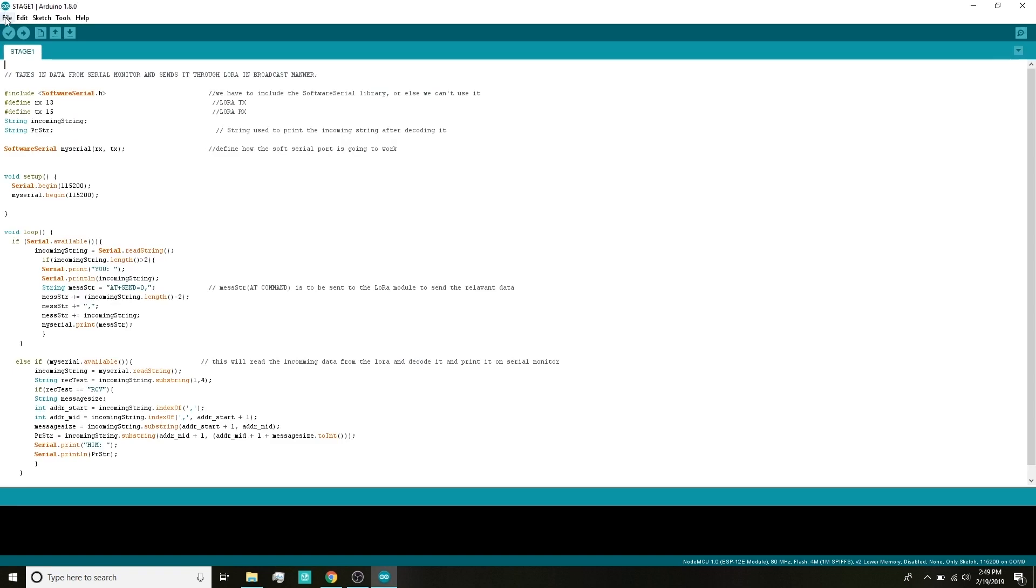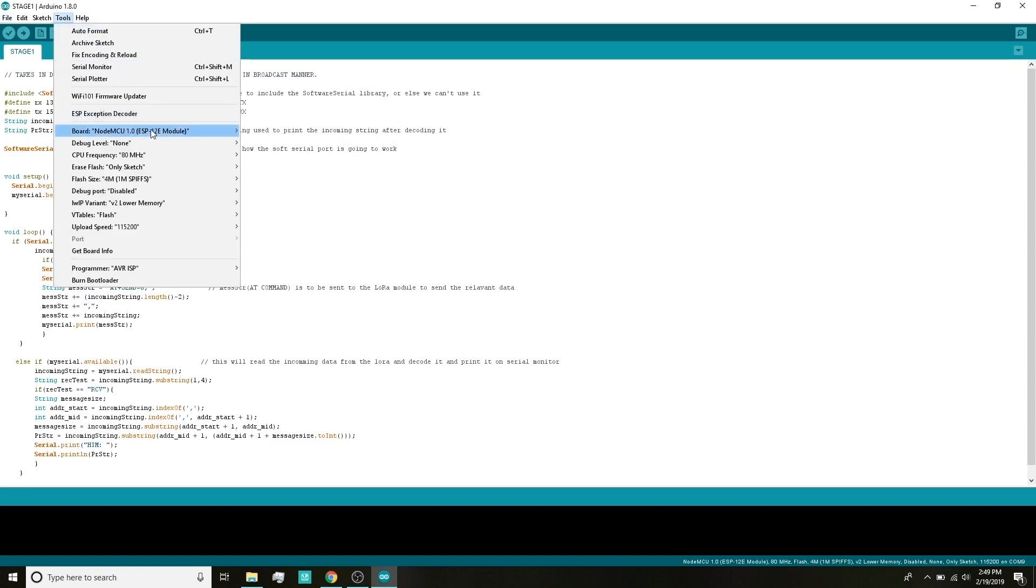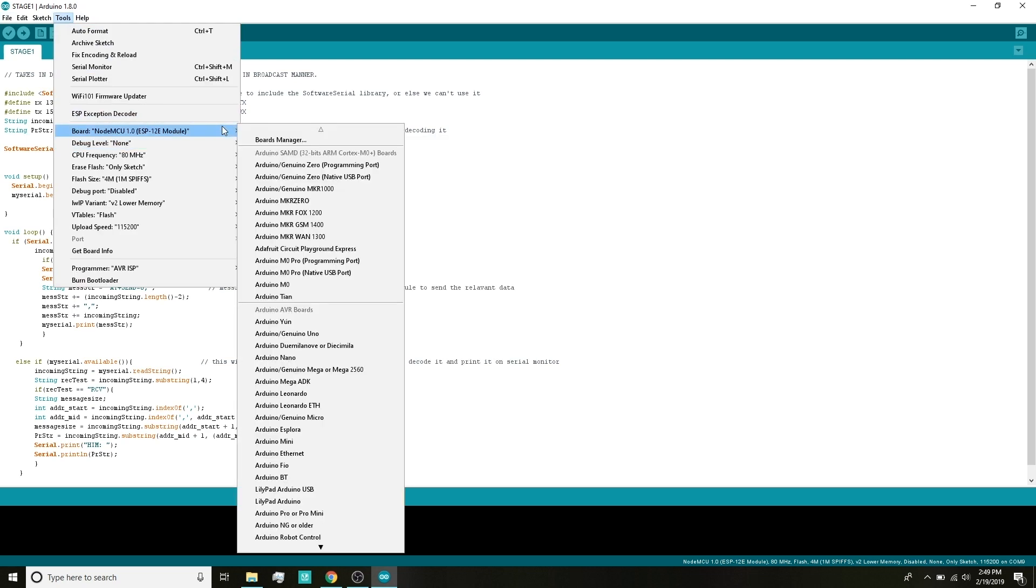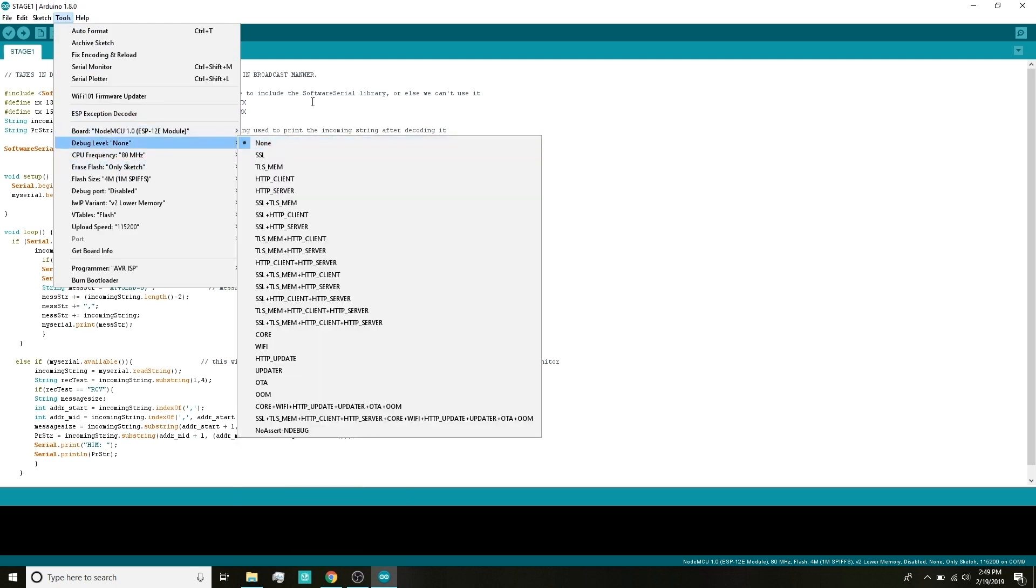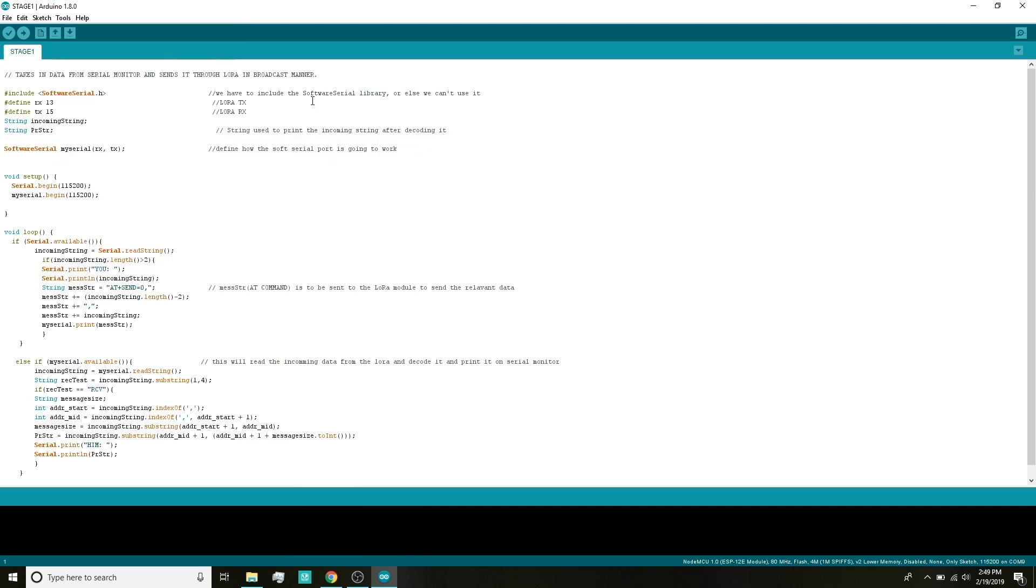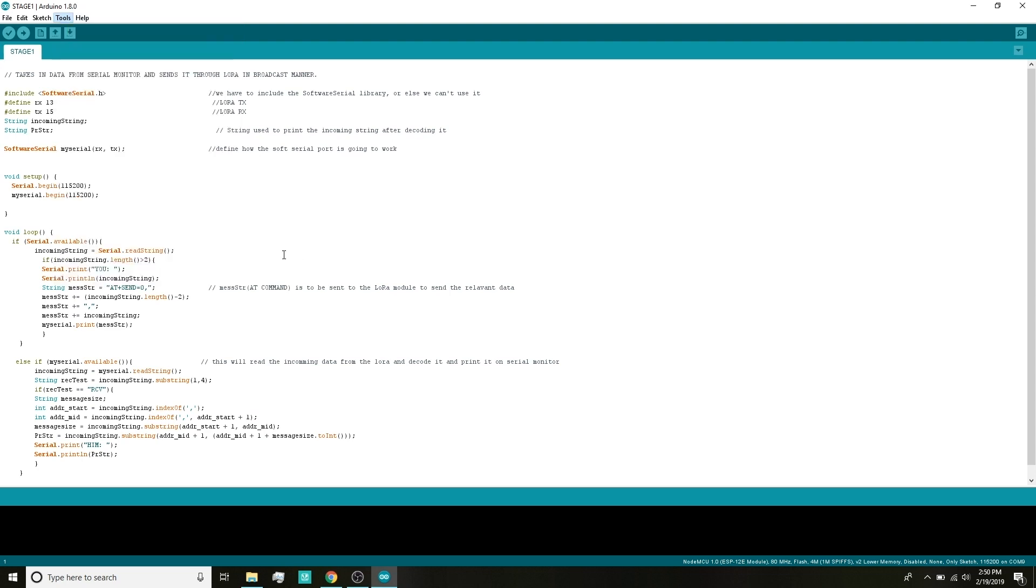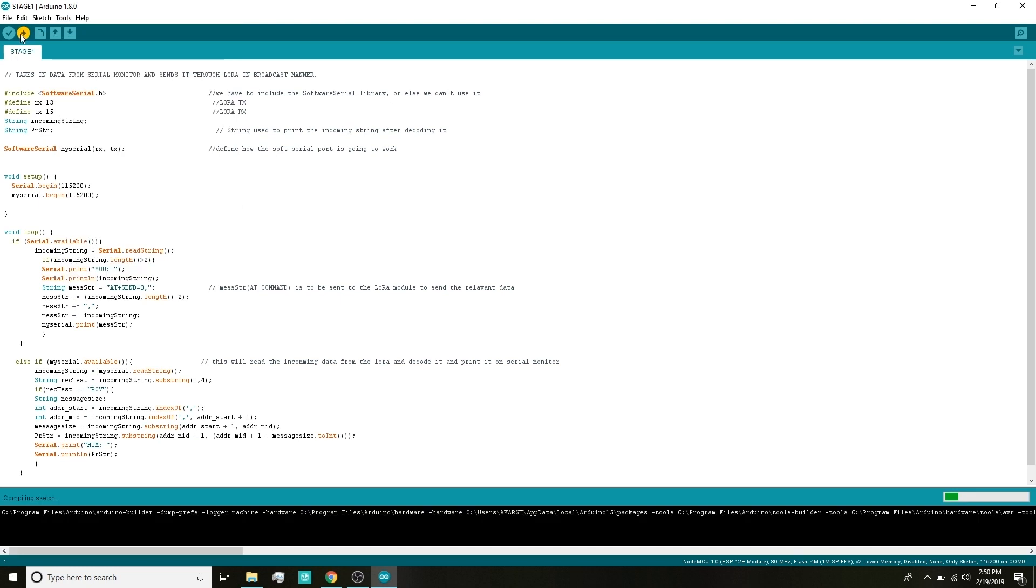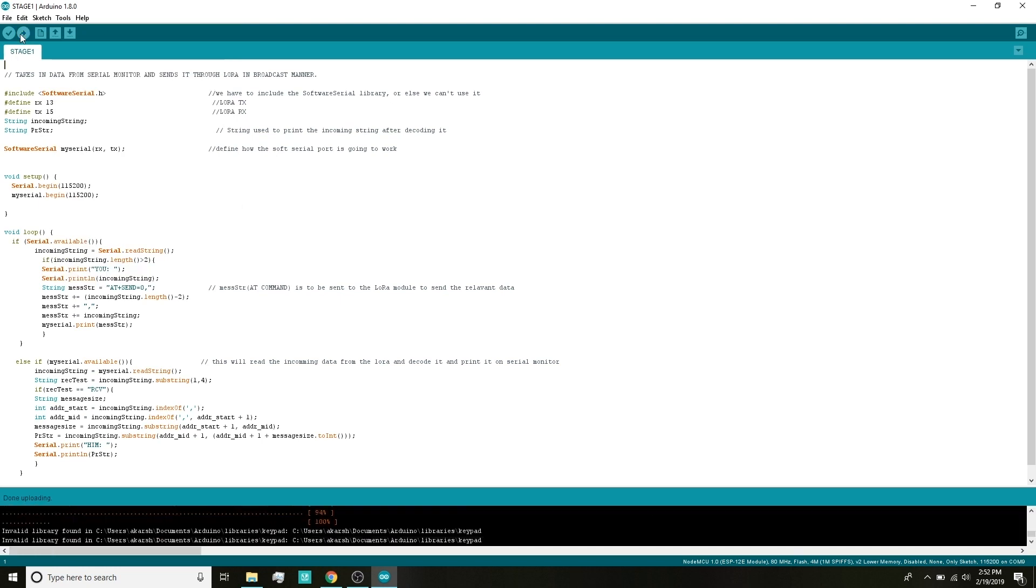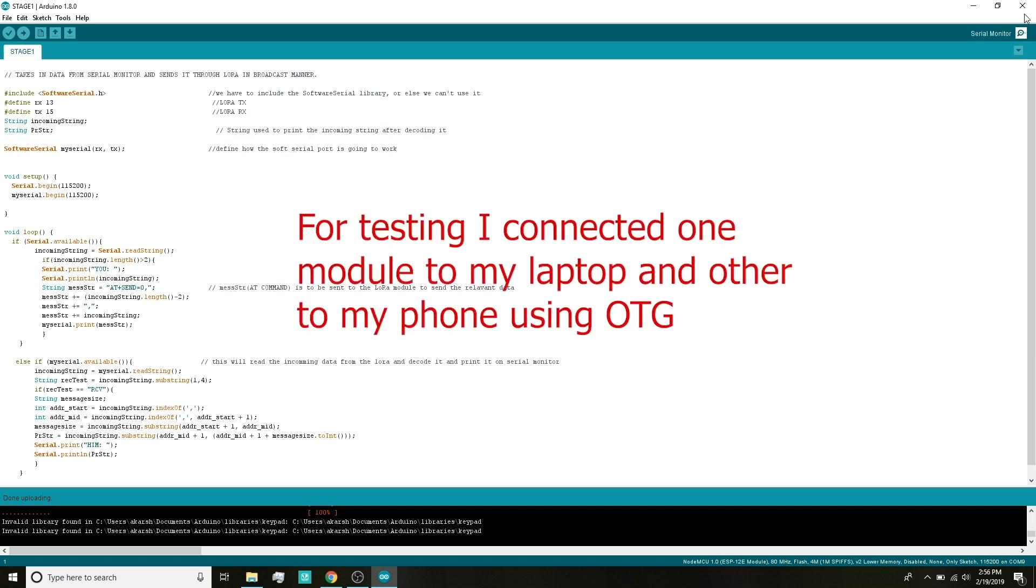Once the code is open in the Arduino IDE, go to Tools and select the board that you're using. For me, it's the NodeMCU version 1.0. Then connect one ESP module to the computer. When that is done, go again to Tools and select the appropriate COM port - for me it's COM 9. Then hit the upload button. Once the code gets uploaded, remove the ESP module, then connect the other one and do the exact same procedure for that module as well.